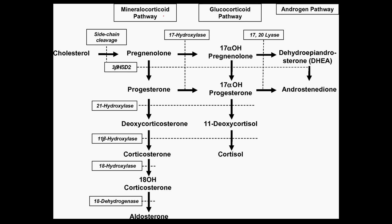Moving on — there are three pathways for the hormones that are going to be produced. We're going to break each of those down and then talk about what causes congenital adrenal hyperplasia. The first thing that I think is really important to know is this first step of cholesterol being converted to pregnenolone. This isn't covered a lot, but it is something I have seen test questions on. The conversion of cholesterol to pregnenolone is carried out by the enzyme cholesterol desmolase, also called just desmolase. Cholesterol desmolase catalyzes the rate-limiting step — the conversion of cholesterol to pregnenolone.